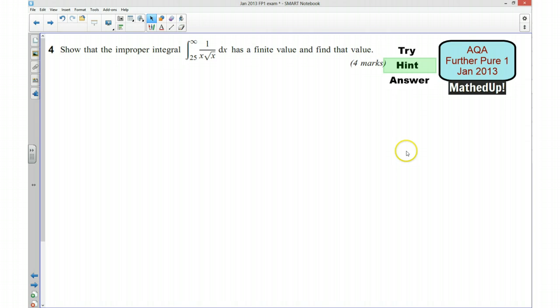Okay, well done if you managed to have a go. I'm now going to go over a hint for how you can answer the question. We need to show that the improper integral has a finite value and find what that finite value is.